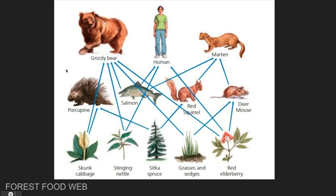Let's take a close look at these different consumers, starting with the red squirrel. This red squirrel, for energy, only eats the Sitka spruce. Share on EdPuzzle — is the red squirrel a herbivore or a carnivore? If you said herbivore, that is correct. This red squirrel is an example of an herbivore because its diet is only plants, and animals that only eat plants are called herbivores. However, the journey of the red squirrel does not end there — if you look at the red squirrel, it can also be eaten by an organism we know as the marten.